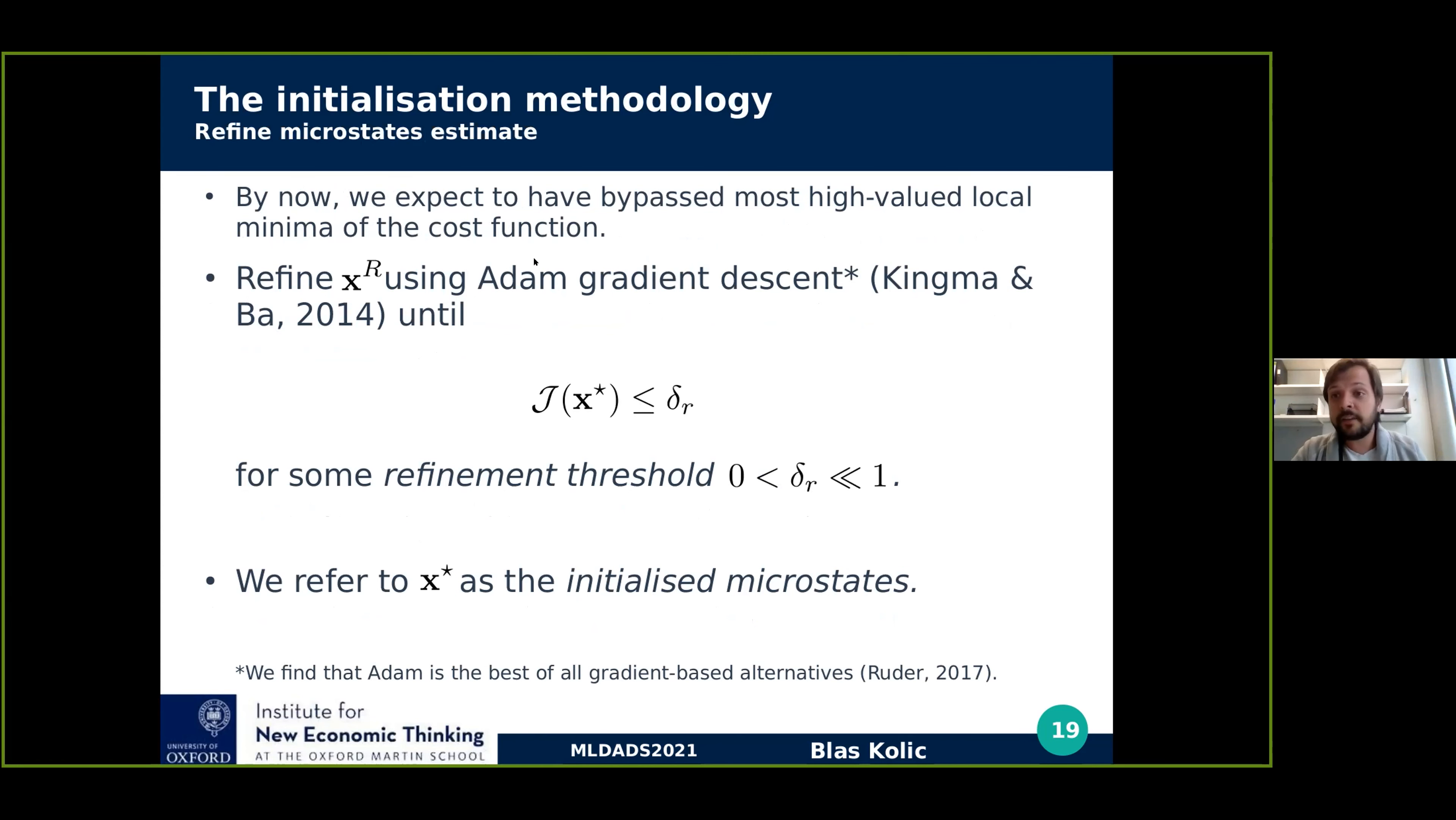Then we expect that we have bypassed most of the high value local minimum of the cost function and refine the rough prediction. In this case, we find over other alternatives that Adam gradient descent is the best of them. And we refine them up to a second threshold, which we call the refinement threshold. This is going to be much closer to zero, and we will refer as X star as the initialized microstates. So these are basically three steps of the initialization procedure.